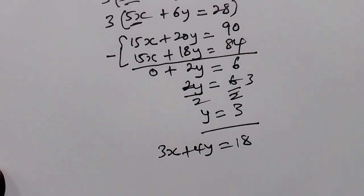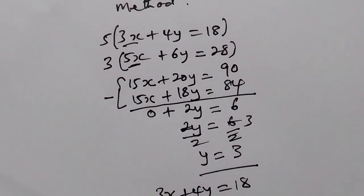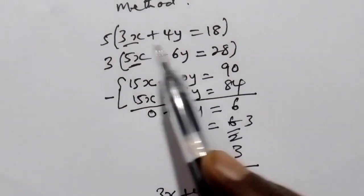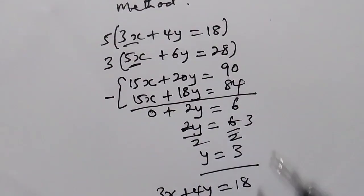We use the first equation, 3x plus 4y is equal to 18, in order for us to get the value of x.